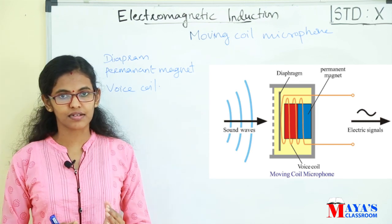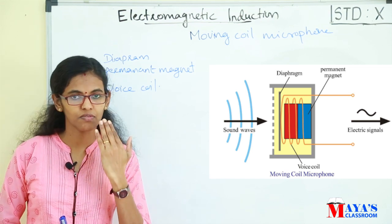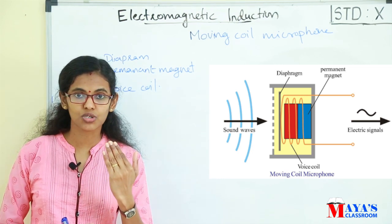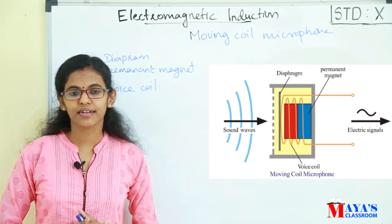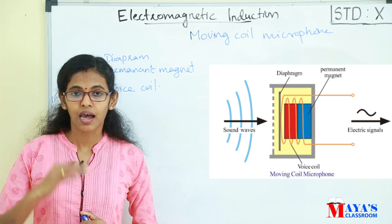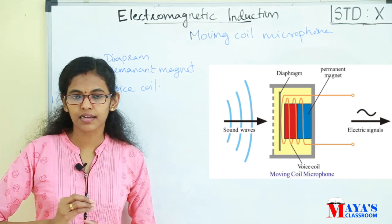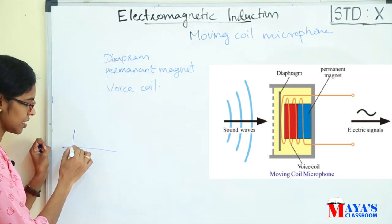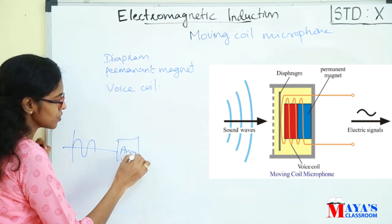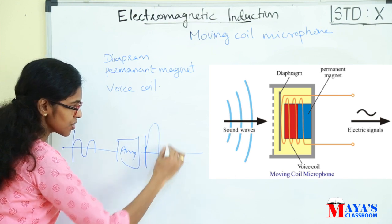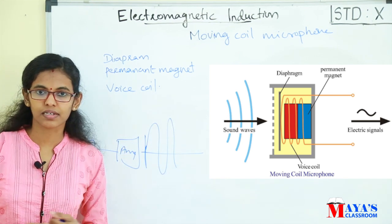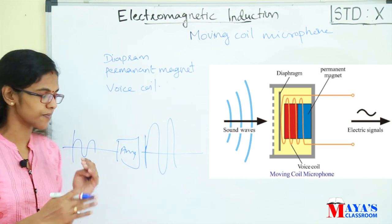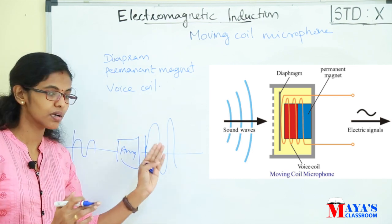As the voice coil vibrates in the magnetic field, it generates electric current — electric signals corresponding to the sound. These weak electric signals are sent to an amplifier, which strengthens them into a strong signal.